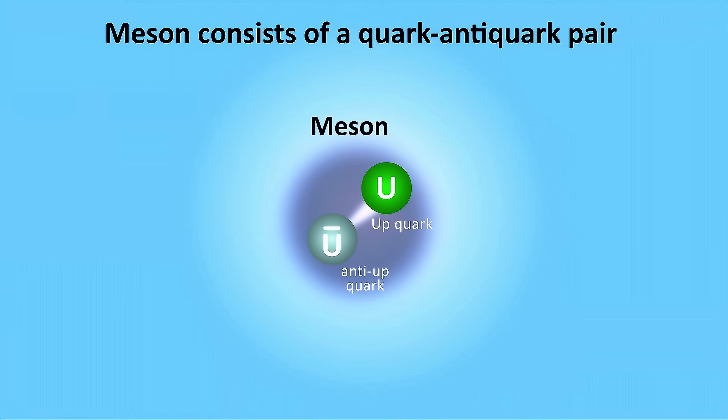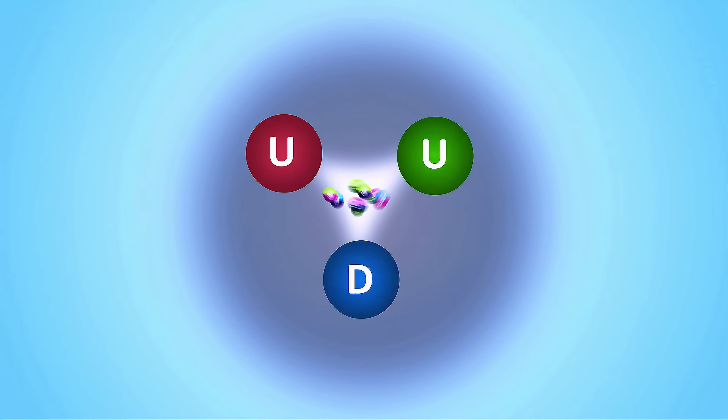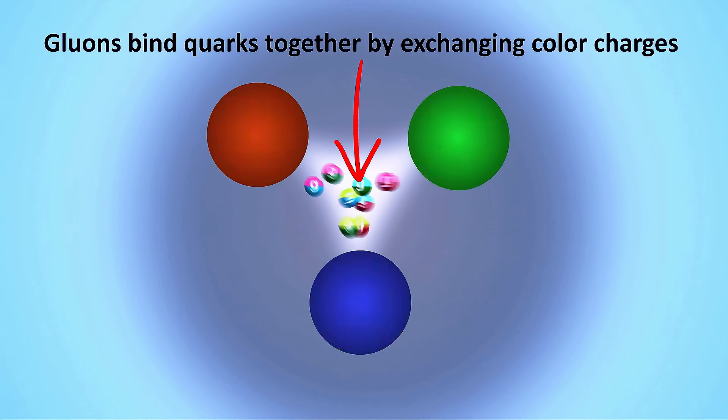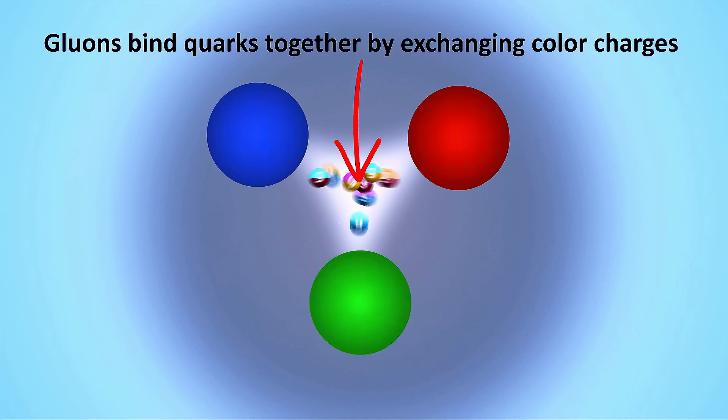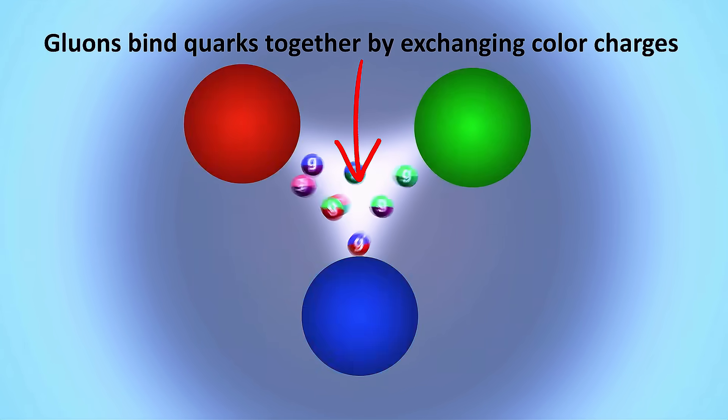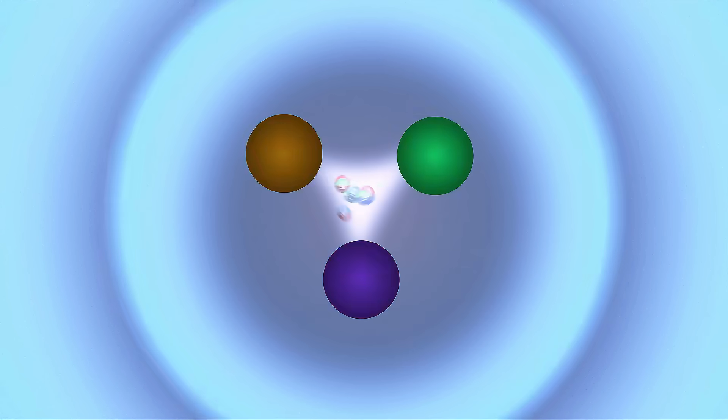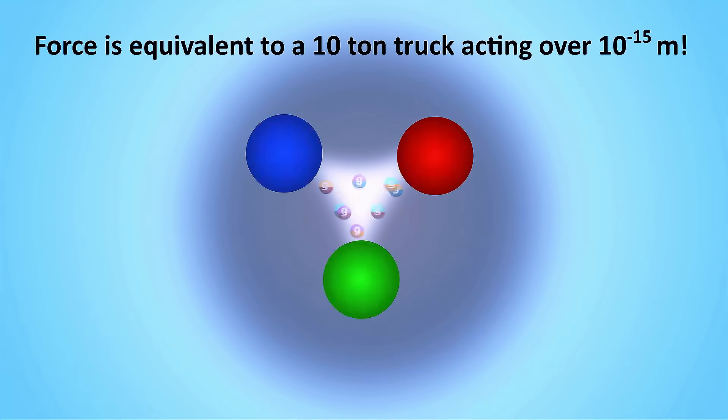If we zoom in to look inside a proton or neutron, what we'll find is the strong force at work. The three quarks are constantly exchanging gluons, which are the carriers of the strong force. They allow a constant exchange of color charges. This creates an incredibly powerful attractive force. So strong, in fact, that it's equivalent to the weight of a 10 ton truck acting over a distance of just 10 to the negative 15 meters.